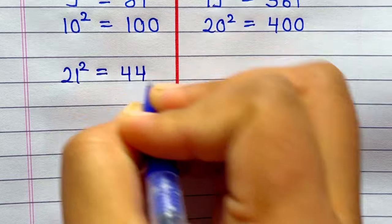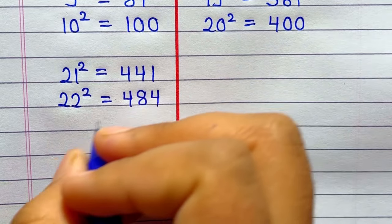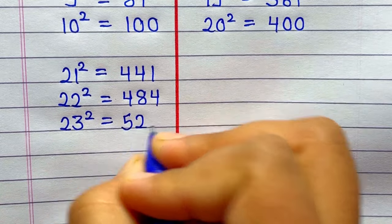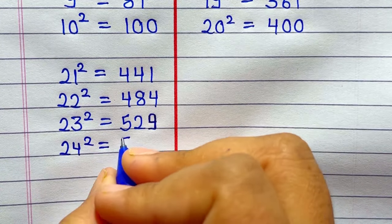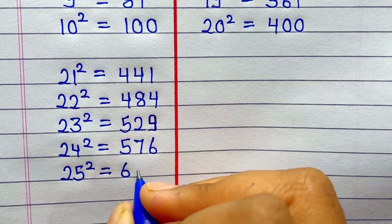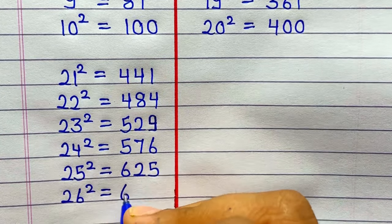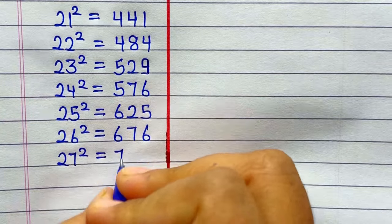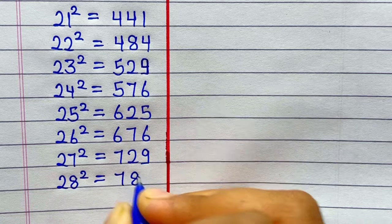21 ka square hai 441. 22 ka square hoga 484. 23 ka square hoga 529. 25 ka square hai 625. 26 ka square hai 676. 27 ka square hai 729. 28 ka square hai 784.